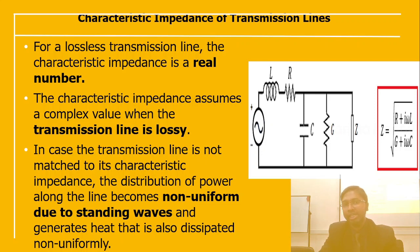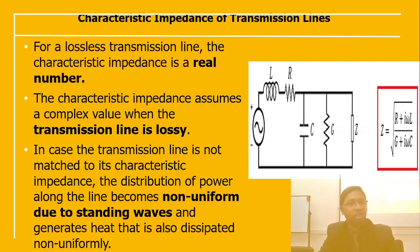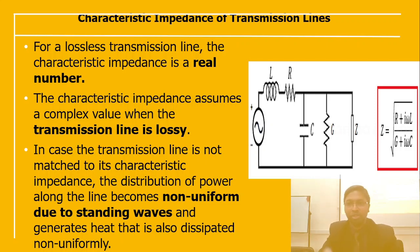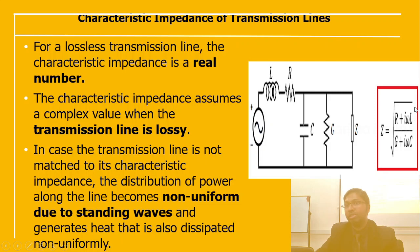For a lossless transmission line, the characteristic impedance is a real number. When the transmission line is lossy, the characteristic impedance assumes a complex value. If the transmission line is not matched to the characteristic impedance, the distribution of power along the line becomes non-uniform due to standing waves, generating heat that is dissipated non-uniformly. The characteristic impedance formula is: Z₀ = √((R + jωL) / (G + jωC)), where R is resistance, ω is angular frequency, L is inductance, G is conductance, and C is capacitance.